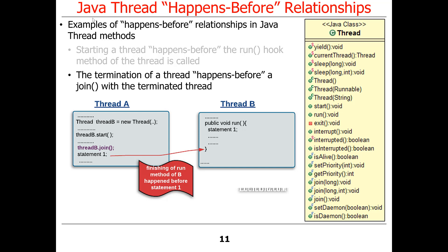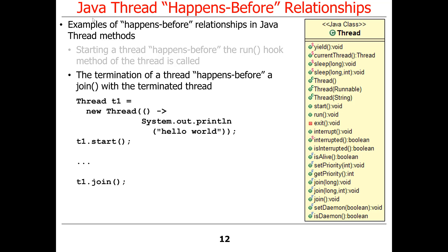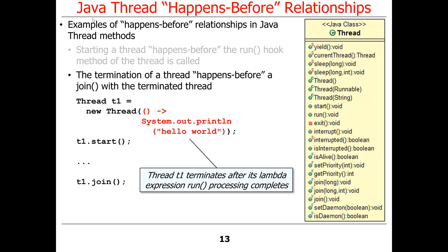Let's talk about the reverse of starting a thread — what happens when a thread terminates. The termination of a thread must happen-before a join with the terminated thread is allowed to complete. In this example, thread A is going to join with thread B, and finishing running the run method of thread B has to happen-before the next statement after the join.